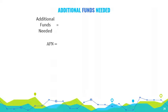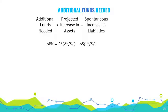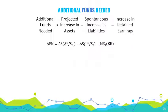AFN is equal to the projected increase in assets, less spontaneous increase in liabilities, less increase in retained earnings. Based on the formula, there are five key factors that determine the need for external financing.